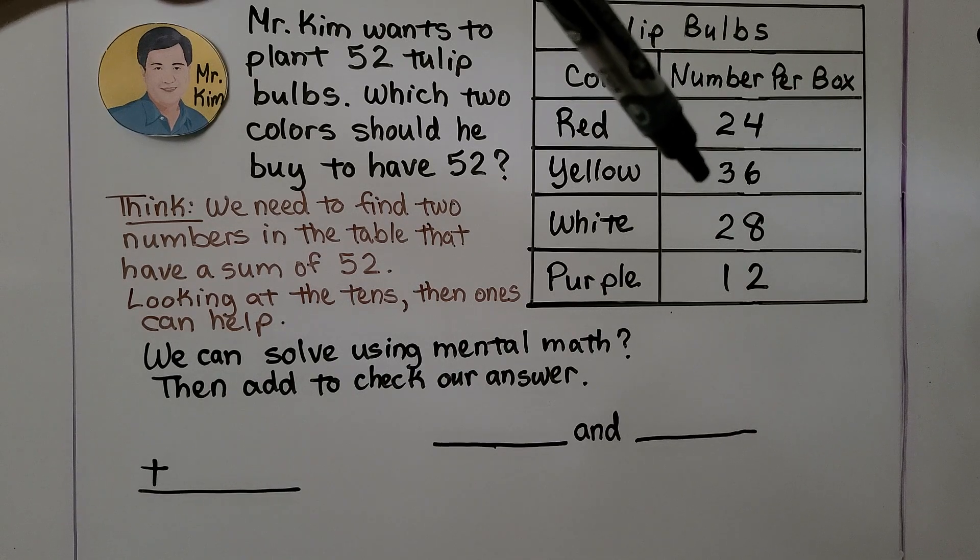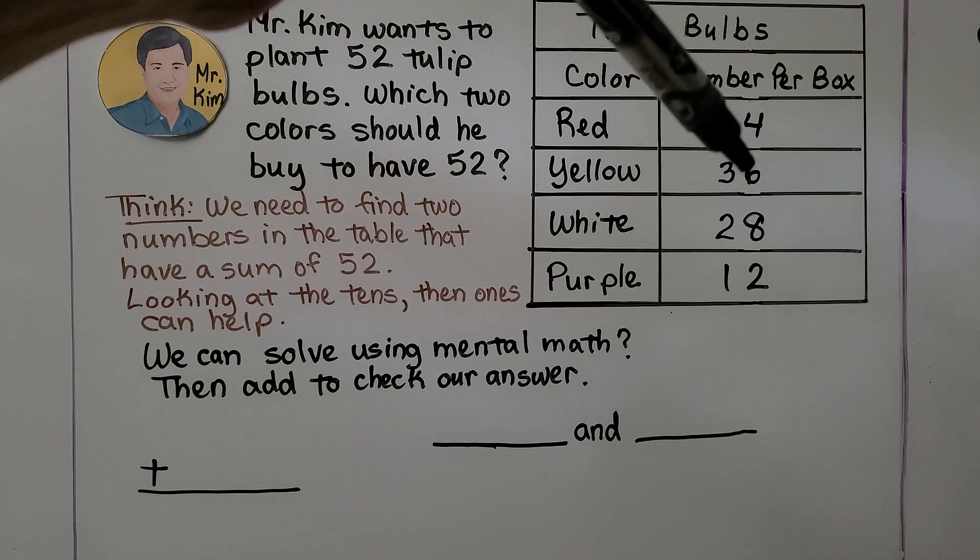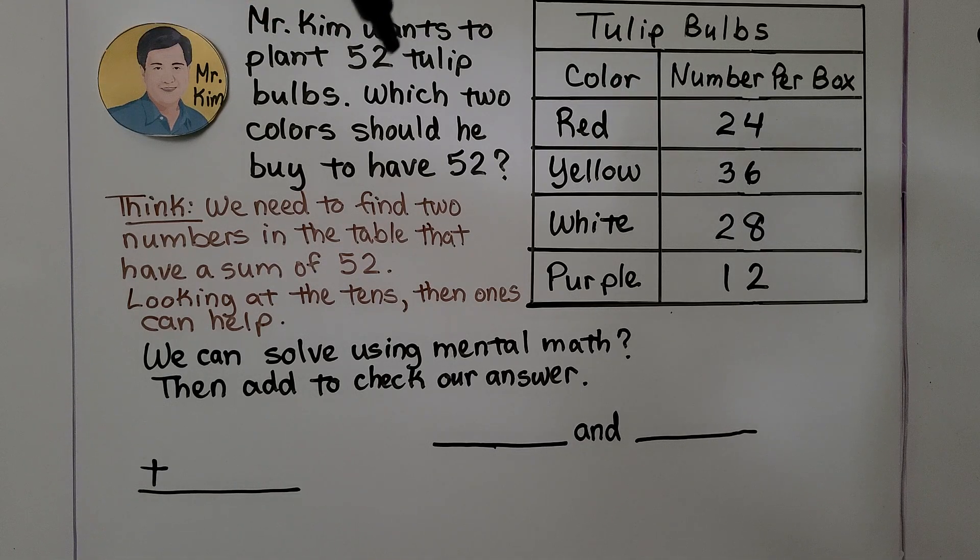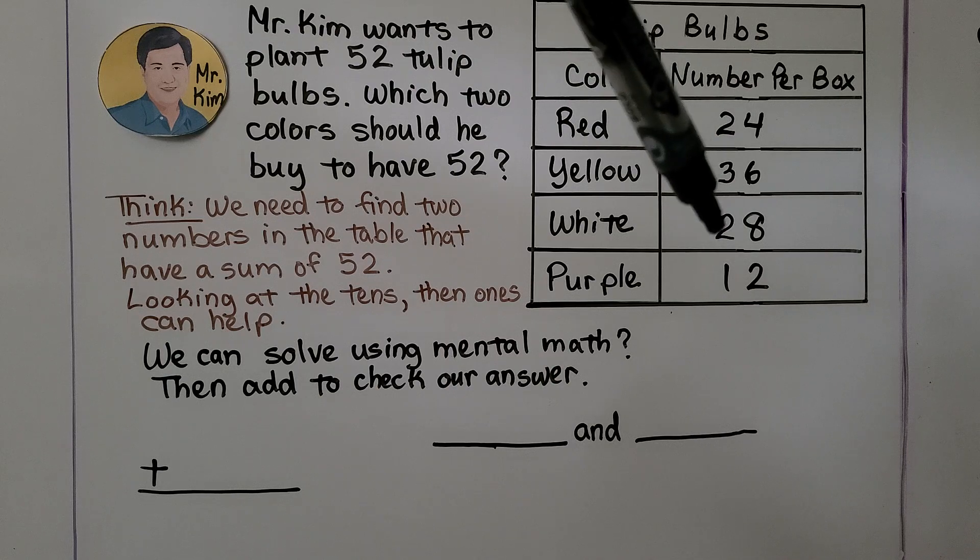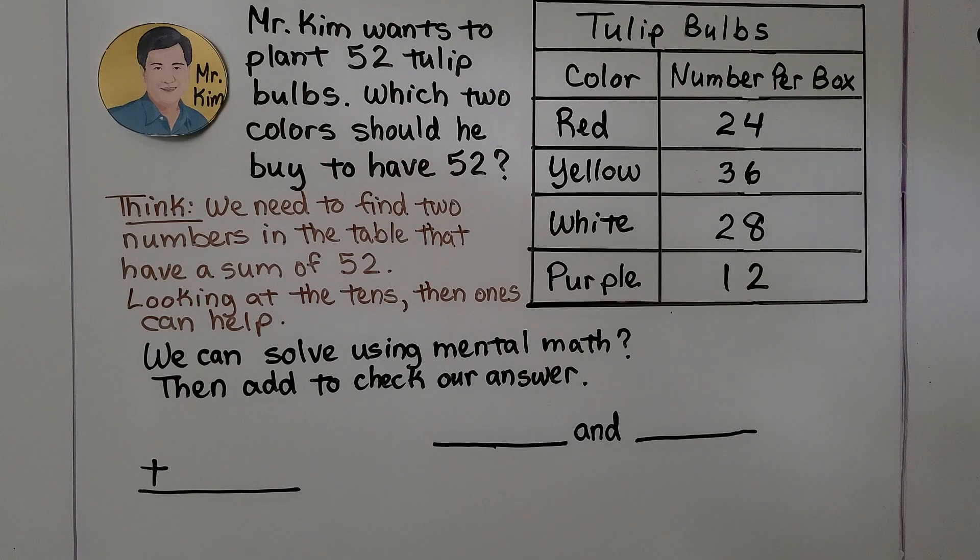We can try yellow and white. 30 and 20 is 50. But by the time we add the ones, that's going to be too much. It's going to be more than 52. And if we add white and purple, 20 and 10 is 30. By the time we add the ones, that's 40. That's not enough.